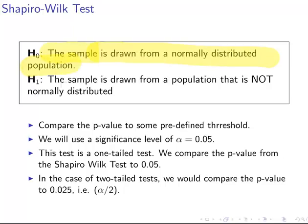The key thing is that we're saying the population is normally distributed. The counterclaim — the alternative hypothesis — is that the population is not normally distributed. So it's either the population is normally distributed or it is not normally distributed.